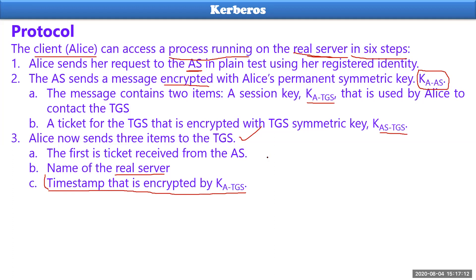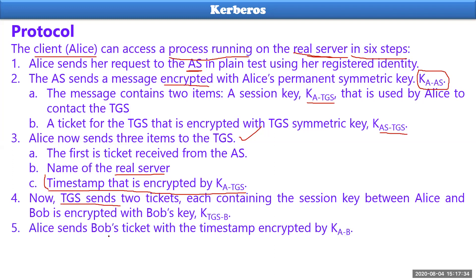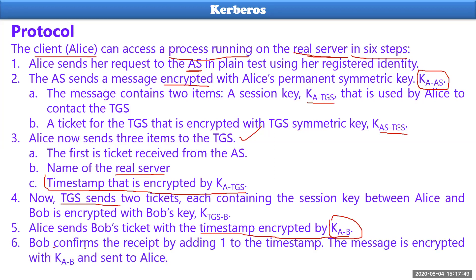Now TGS sends two tickets, each containing the session key of Alice and Bob — the two parties — and the encrypted Bob key, that is KTGS of Bob. These two are sent by TGS after communication is sharpened by Alice. Then Alice sends Bob's tickets to TGS, and the timestamp and encrypted TGS are sent to Bob. Bob accepts and confirms, so communication gets started.